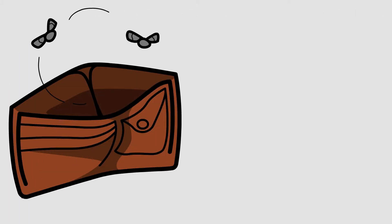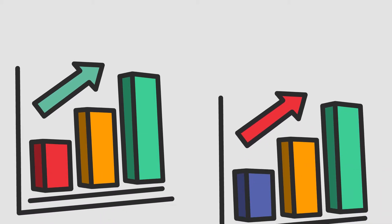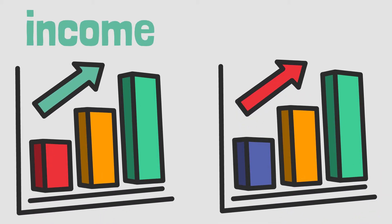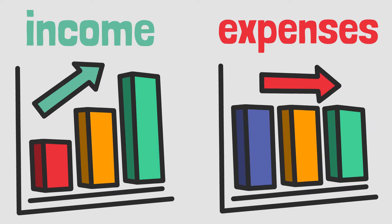Seven Cures for a Lean Purse. To build a fortune, start by utilizing the wealth you already have. Your necessary expenses will always grow to equal your income unless you do something about it. Don't confuse your necessary expenses with your desires. Budget for all your necessary expenses.